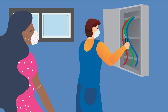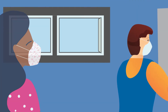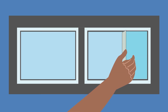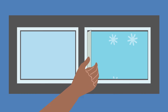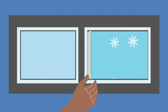An electrician wearing a mask works on a fuse box in the basement of the home. The homeowner opens the basement window near where he is working. Snowflakes can be seen falling outside the basement window.